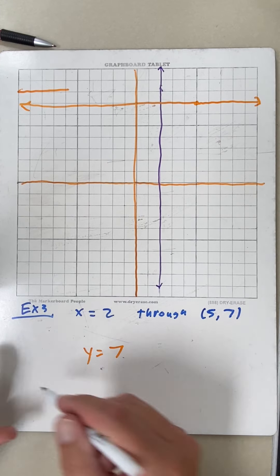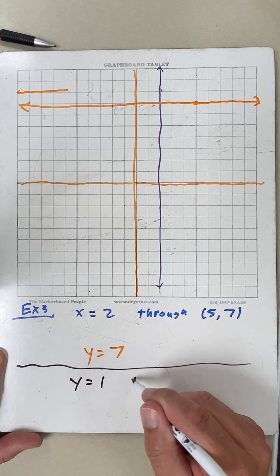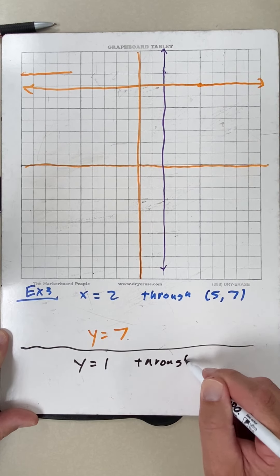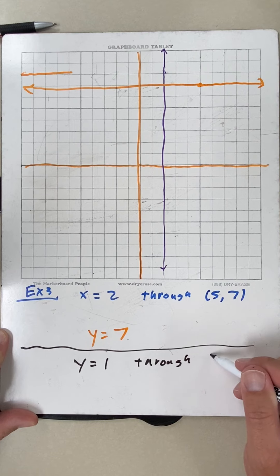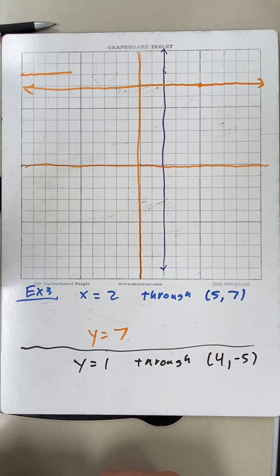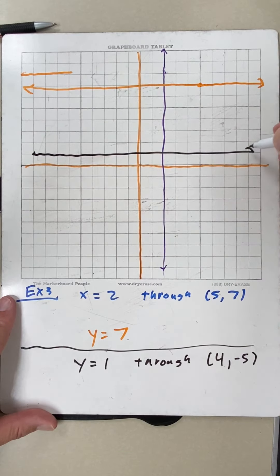Now, if I had done a different problem, say a y equals 1 through a point 4, negative 5. Now we're dealing with a different type of line. So y equals 1 is the horizontal line through here.